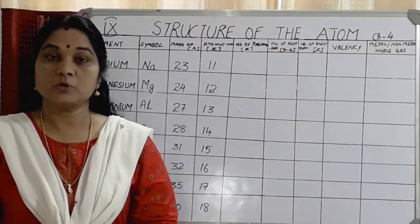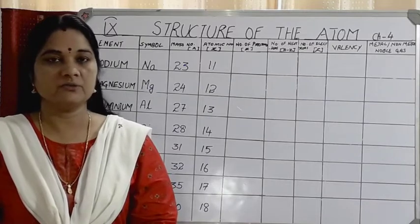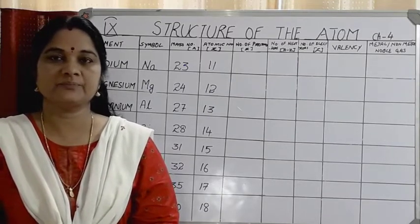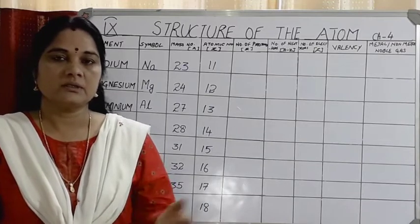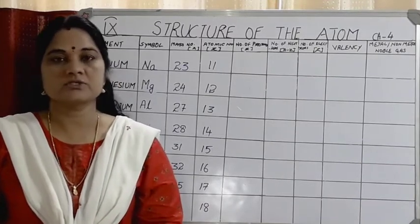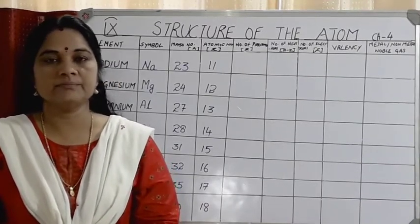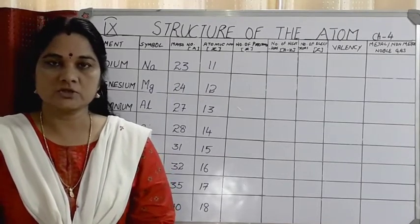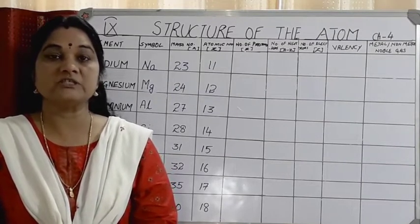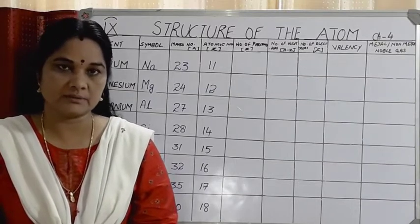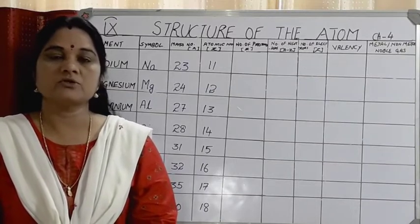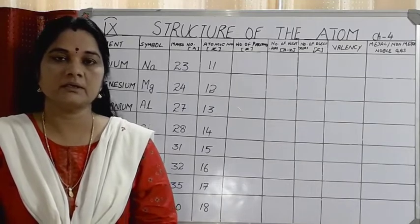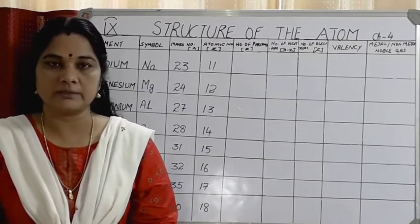How are you all? Hope all of you are taking very good care of your health. Stay safe. Now let's continue with the chapter 'Structure of the Atom.' In our previous class, we had discussed the structure of atoms with respect to different elements in the periodic table. We also discussed what is atomic number, mass number, and valency of the atom of an element.